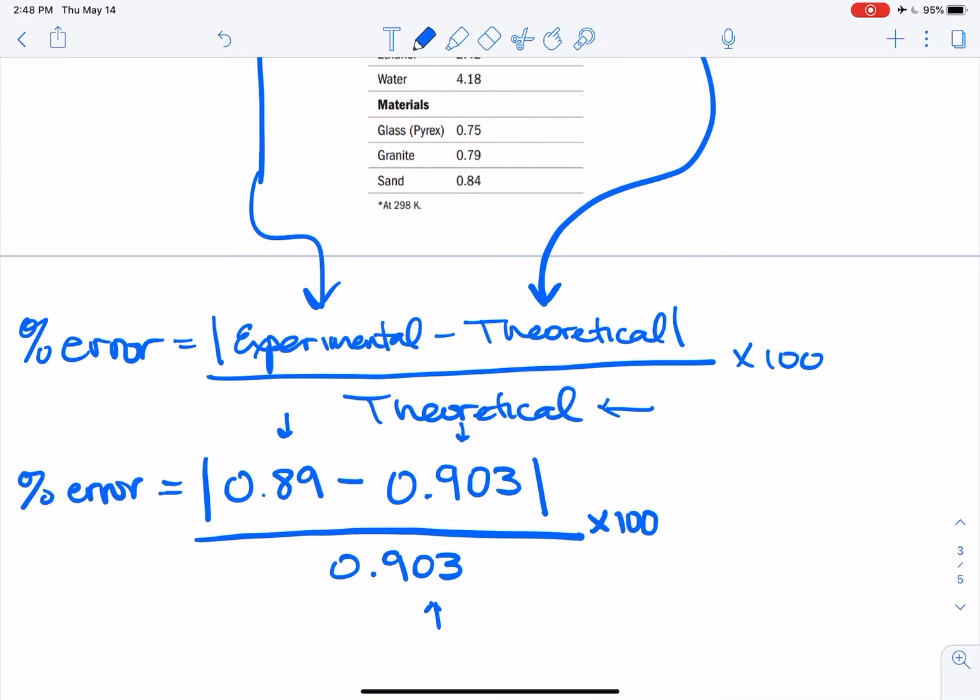So then we're going to do 0.89 minus 0.903 and that's going to give you a negative value, but that's okay because anything that's in the absolute value bars, these things right here, comes out positive on the other side. So sometimes if you go online and you look up the equation for percent error, it'll have these two values switched around.